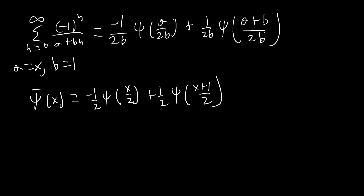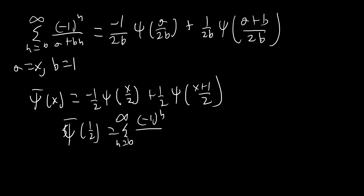So while di gamma bar of x is expressible in terms of known functions, it's still an interesting function to explore. One thing I'd like to challenge you to do is prove all the identities we showed using the closed form without converting back to the series. Also, di gamma bar of one half equals the sum from n equals zero to infinity of negative one to the n over n plus one half, which equals pi over two — a pretty interesting value. Hope you guys enjoyed the video; let me know if you'd like more content like this.